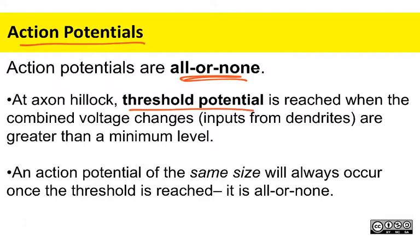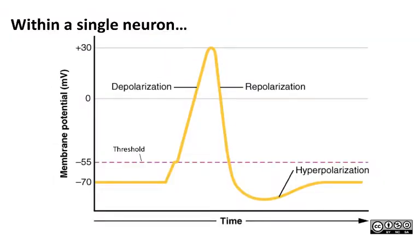At the axon hillock is where that decision is taken. The threshold potential happens when the combined changes associated with graded potentials meet this specific level: negative 55 millivolts. Once that happens, it triggers the opening of those voltage-gated channels. Just like you can measure the amount of current flowing through an electrical circuit, you can stick an electrode in an axon and record changes in the movement of electricity over time. That's what we're looking at in this graph — time on the x-axis, and the change in voltage across the membrane in millivolts on the y-axis.